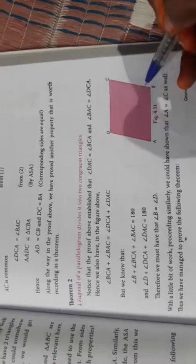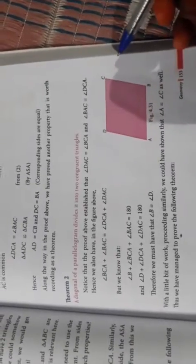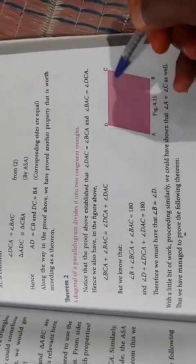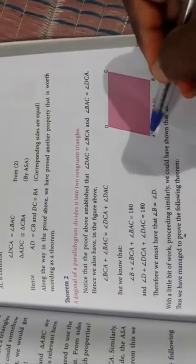The diagonal of a parallelogram divides it into two congruent triangles. Diagonal of a parallelogram means: A to C forms one triangle, B to D forms another triangle. When we join A to C, we get two triangles, and those two triangles are congruent.